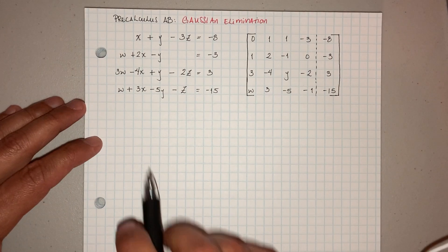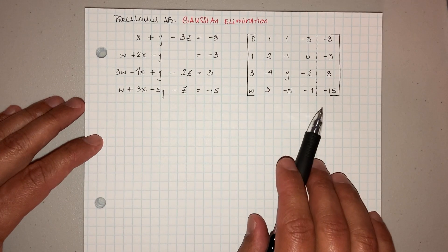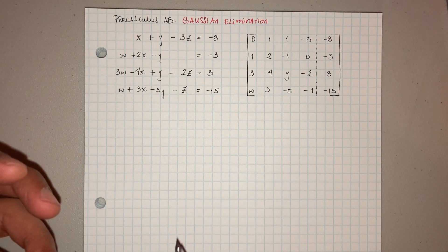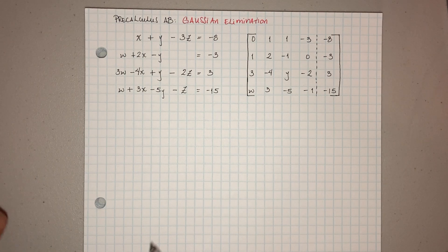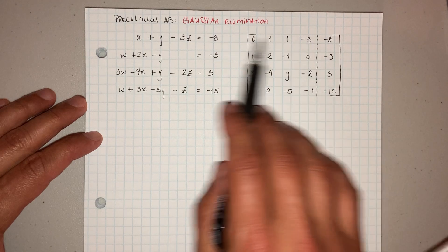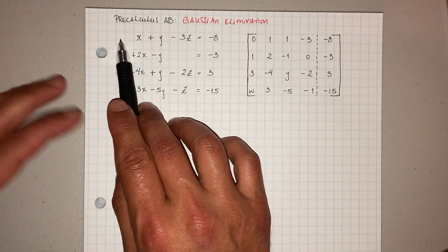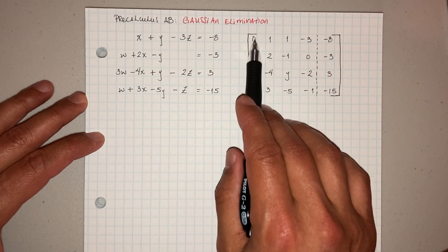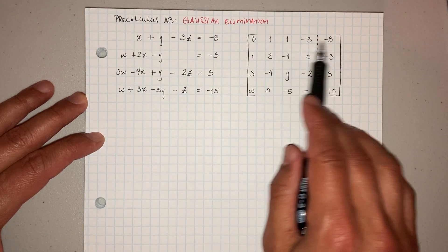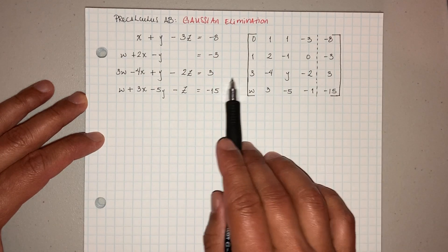Alright, so we have our system here, and the good thing about matrices is you're able to go ahead and solve them rather quickly. So I went ahead and set up my matrix using W, X, Y, and Z. The first column is W, so 0, 1, 1, negative 3, negative 8, and all these just corresponding.